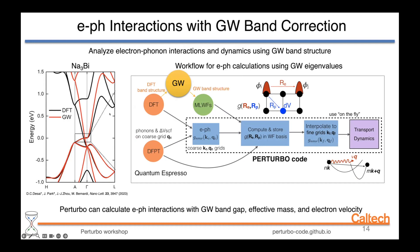The workflow for incorporating GW eigenvalues starts from DFT but feeds the electronic structure into a GW code such as Yambo or BerkeleyGW. From the GW eigencorrections we compute maximally localized Wannier functions using the GW electronic structure, and the rest of the workflow is identical to the standard PERTURBO pipeline. PERTURBO can accurately capture electron-phonon interactions including the GW-corrected band gap, effective mass, and electron velocity.